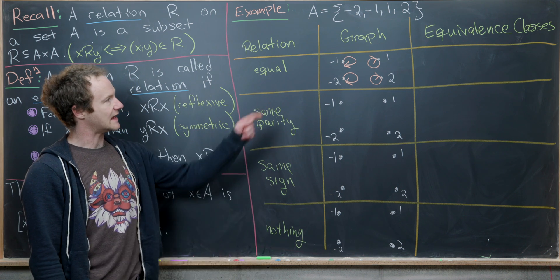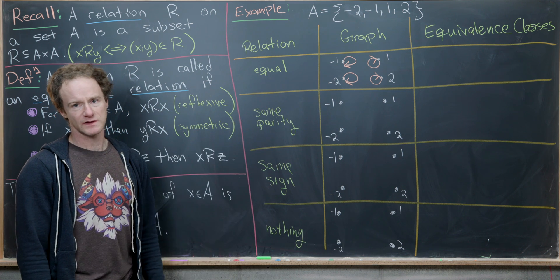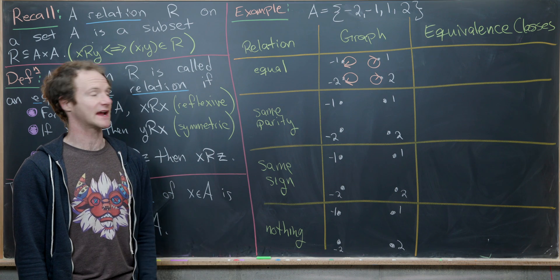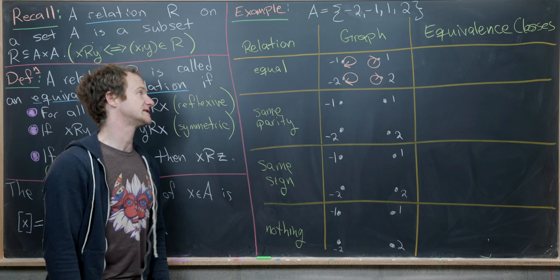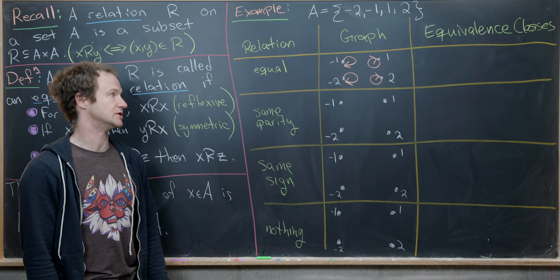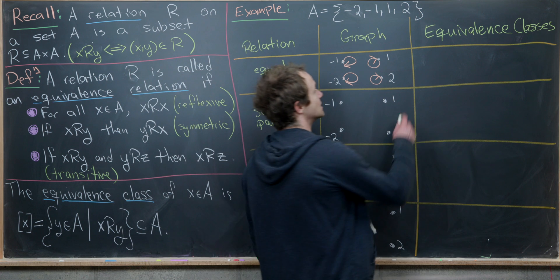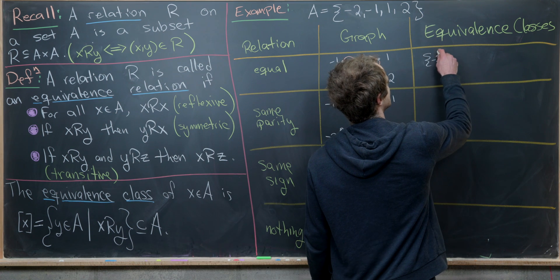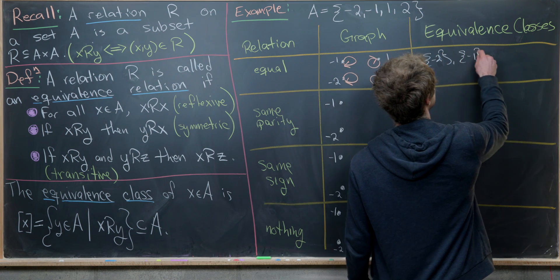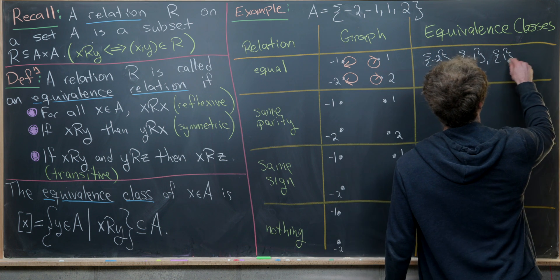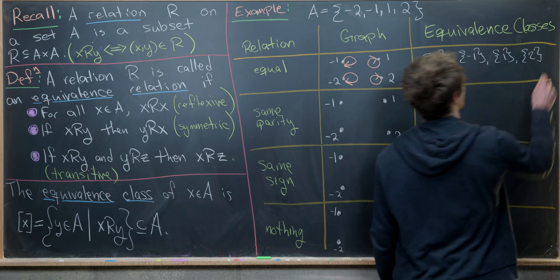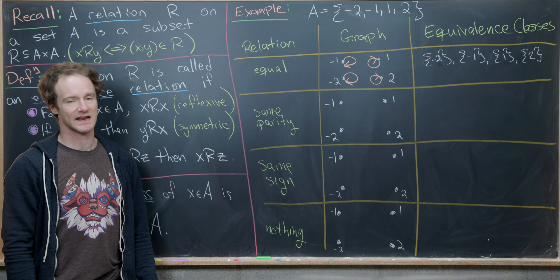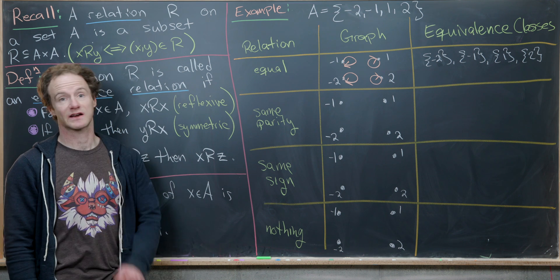The equivalence classes here are straightforward: everything equivalent to negative one is just negative one, everything equivalent to negative two is just negative two, and so on. The equivalence classes are just singletons for all elements of the set. As noted, we didn't really filter the set into a simpler object.